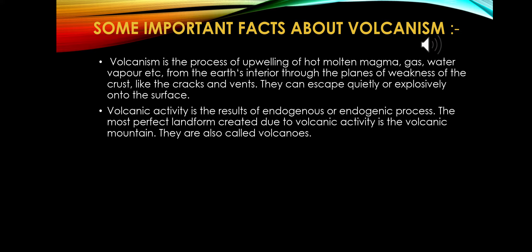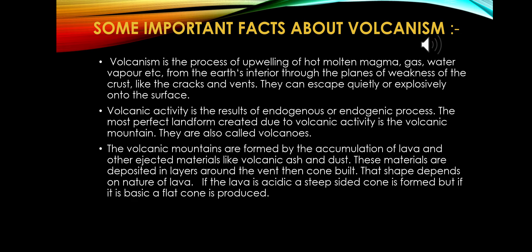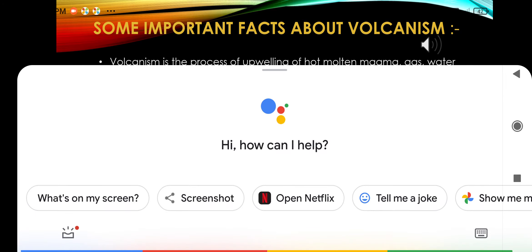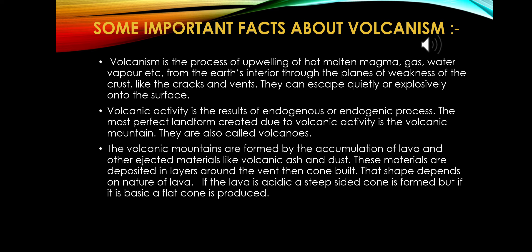The most spectacular landforms created due to volcanic activity are known as volcanic mountains, also called volcanoes. Volcanic mountains are formed by the accumulation of lava and other ejected materials like volcanic ash and dust. These materials are deposited in layers around the vent, and after a few years a volcanic cone is built. The shape of this cone depends on the nature of the lava — if the lava is acidic, a steep-sided cone is formed; if it is basic lava, a flat cone is produced.